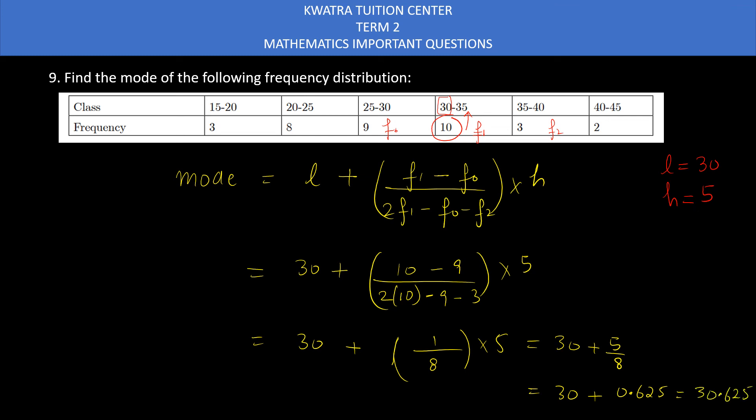So yes, 30.625 is the mode of the following frequency distribution. I hope you liked the video. In the next video, I will be covering the 10th question.